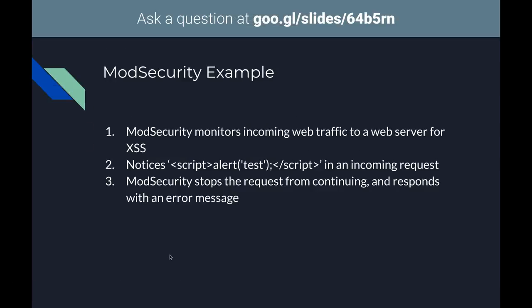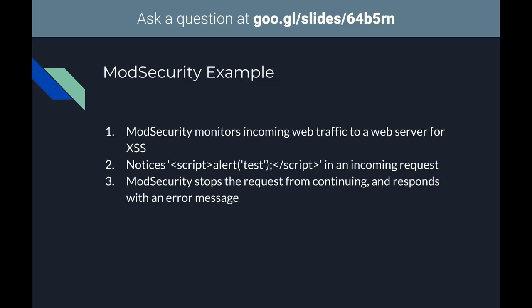Another more practical example: you have a rule set looking for script tags in the request — meaning users are likely trying a cross-site scripting attack. mod_security is watching all traffic, it sees a query containing `<script>alert('test')</script>`, and it stops the request and responds however you configure it. It's sitting in front of your web application, so your web application will never see this traffic. It's a proper firewall in this instance.